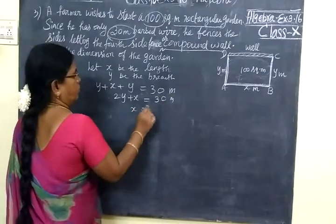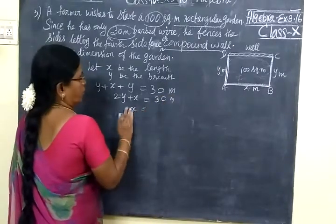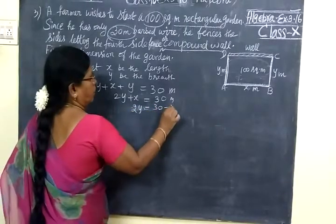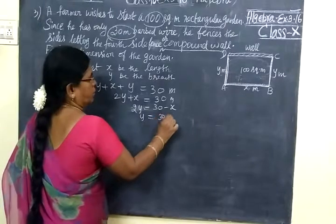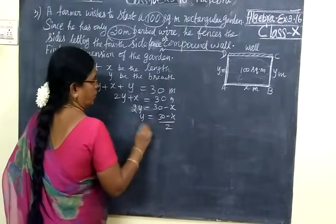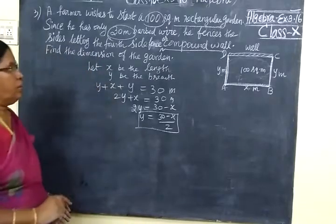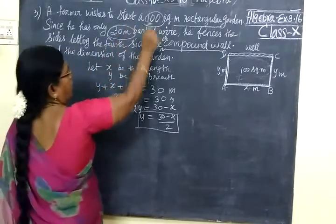So y plus x plus y equal to 30 meter. So 2y plus x equal to 30 meter. Or x is equal to 30 minus 2y. Or 2y equal to 30 minus x. Or y equal to 30 minus x by 2. Next thing, it is given this area is 100 meter.